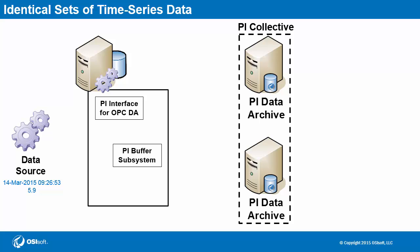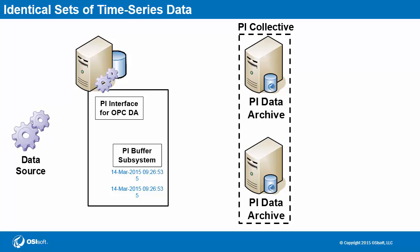The PI interface then retrieves this value. As it leaves the PI interface, the data value is picked up by the PI buffer subsystem and then duplicated for each member of the PI collective. Finally, each replicate is sent along its way. As you can see, the PI buffer subsystem via n-way buffering is the key component in creating identical sets of time series data for every member of the PI collective.